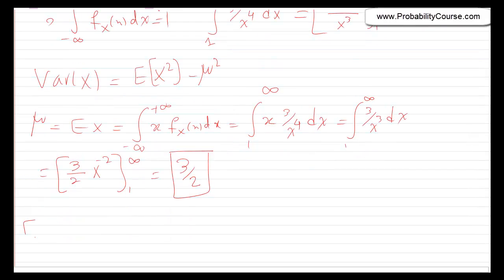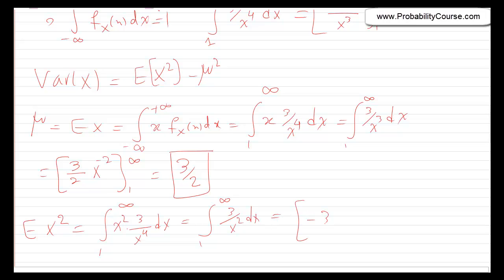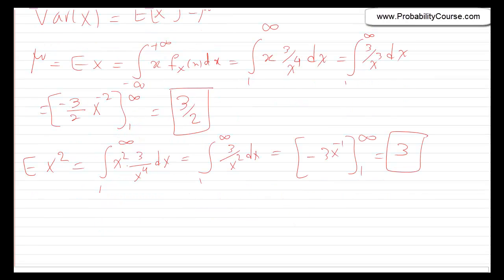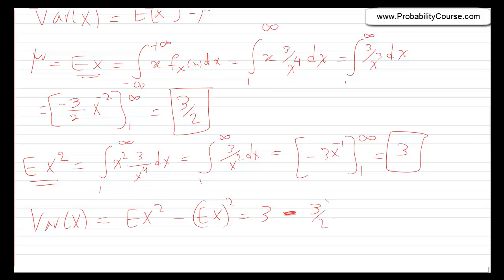Now let's find E[x squared]. This equals the integral from 1 to infinity of x squared times (3 over x to the 4) dx, which becomes the integral from 1 to infinity of 3 over x squared dx, equals minus 3 times x to the minus 1, evaluated from 1 to infinity, which gives 3. So variance of x equals E[x squared] minus (E[x]) squared equals 3 minus (3/2) squared equals 3 minus 9/4, which equals 3 over 4.